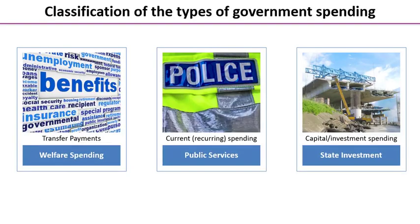Delving into a bit more detail, we have effectively three types of government spending shown on the screen. We have welfare spending, which we sometimes call transfer payments — that might be things like pensions. We've also got current spending, which is recurring day-to-day spending on public services, and then capital spending or investment spending.